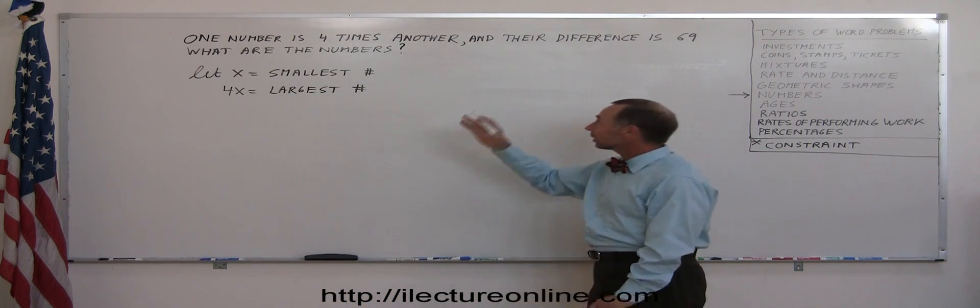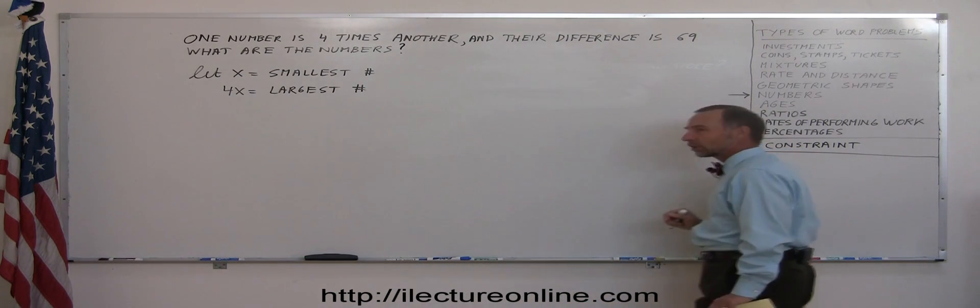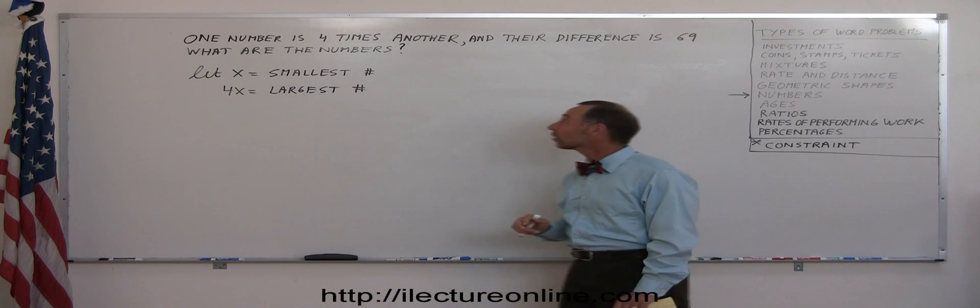Now we want to solve what they are. What are the two numbers? We're looking for the constraint. The constraint will help us figure out what the numbers are.